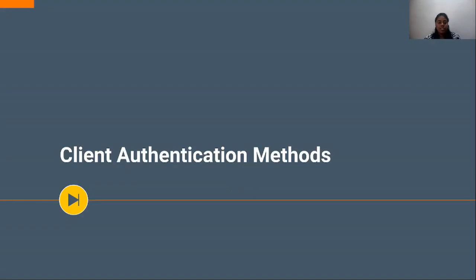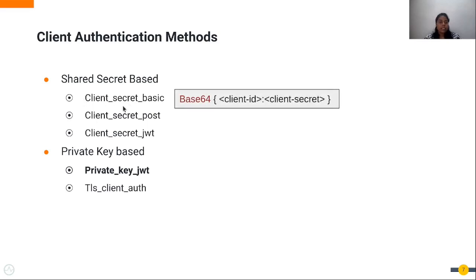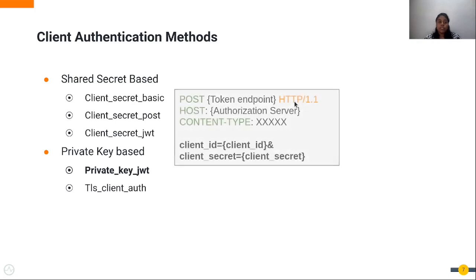Since we have two types of secrets, there are several authentication methods the client can use. For shared-secret-based authentication, one mechanism is client_secret_basic, where the client encodes the client ID and client secret using Base64 and adds it to the Authorization header. Another is client_secret_post, where the client ID and client secret are packed in the request body.